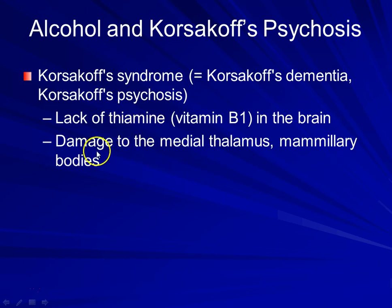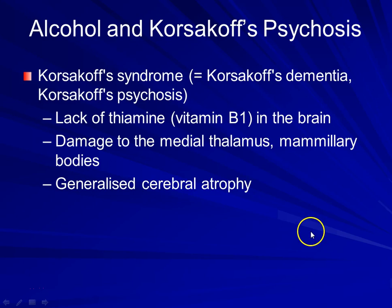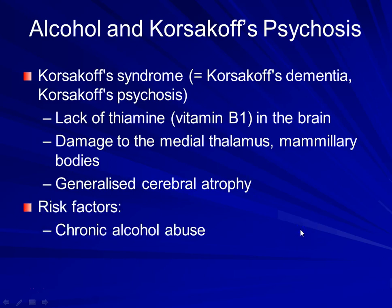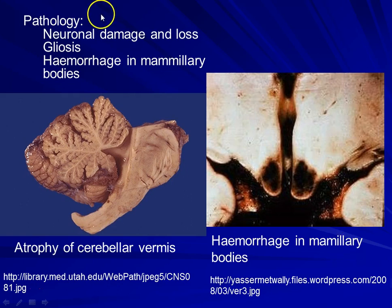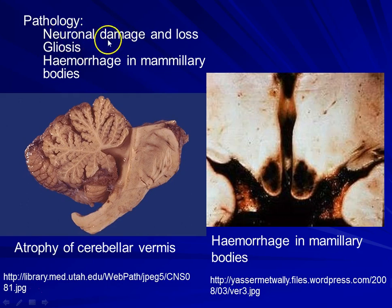Without thiamine, there is resulting damage to specific areas like the medial thalamus and also the mammillary bodies. Classically, what we will see is hemorrhage within the mammillary bodies, and there may also be generalized cerebral atrophy. The risk factors in addition to alcohol abuse include severe malnutrition, so Korsakoff psychosis is not only seen in alcoholics — it can also be seen in severe malnutrition and other states as well. Grossly, in the cerebellum in a section through the midline you can see the cerebellar vermis with atrophy. There can also be hemorrhage in the mammillary bodies. Microscopically, when we look at these areas there will be neuronal loss, there may be reactive gliosis with proliferation of glial cells, and we can also see hemorrhage within the mammillary bodies.